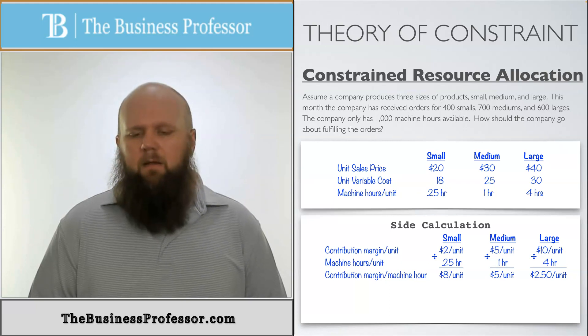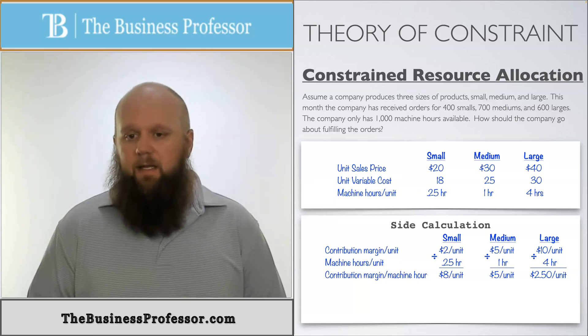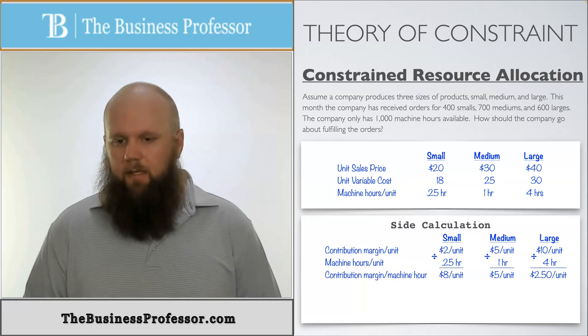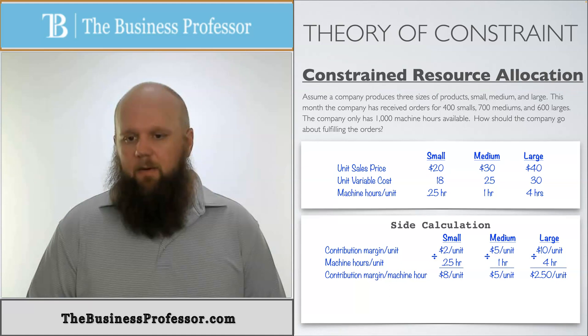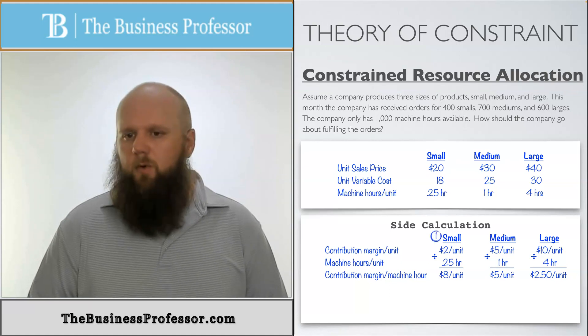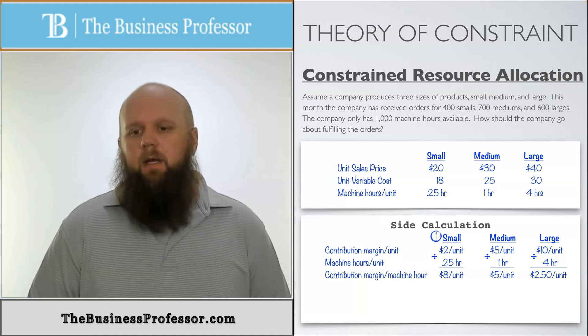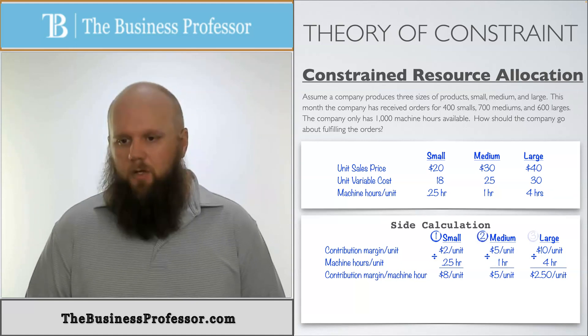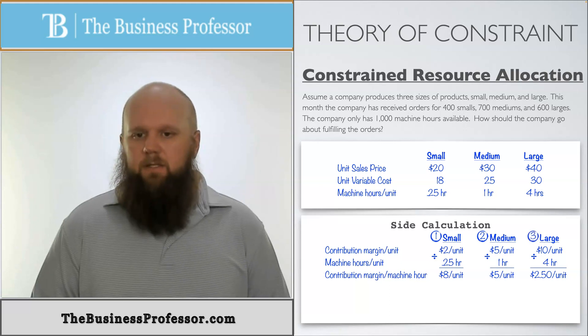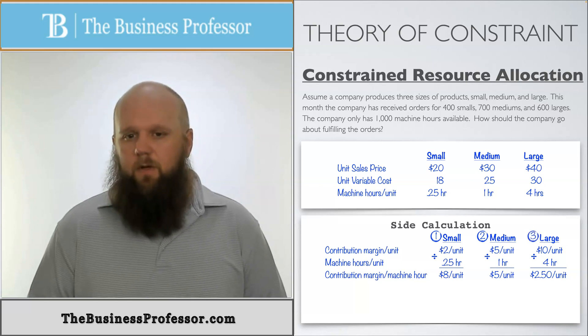Okay, so now that we have that, now we could actually rate these in order in which we think we need to produce these. So because small has the highest contribution per machine hour, we're going to start that one first. We're going to do all of those until we have no more to produce that's been ordered. And then we're going to move into medium because that's the second highest. And then we're going to move into large. So what does this look like in terms of actual production for the orders that we've got?